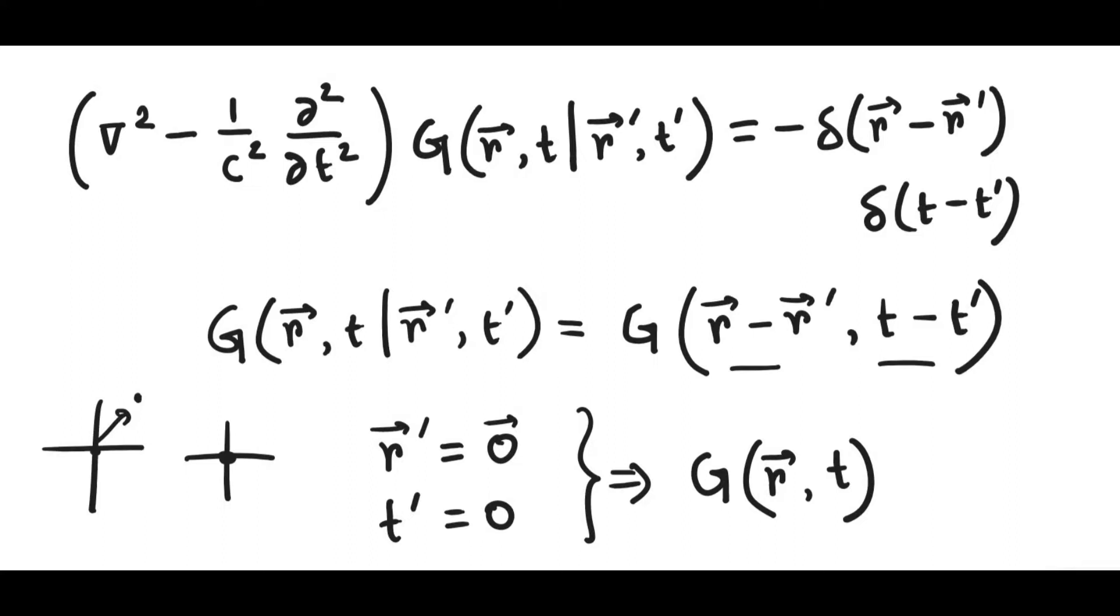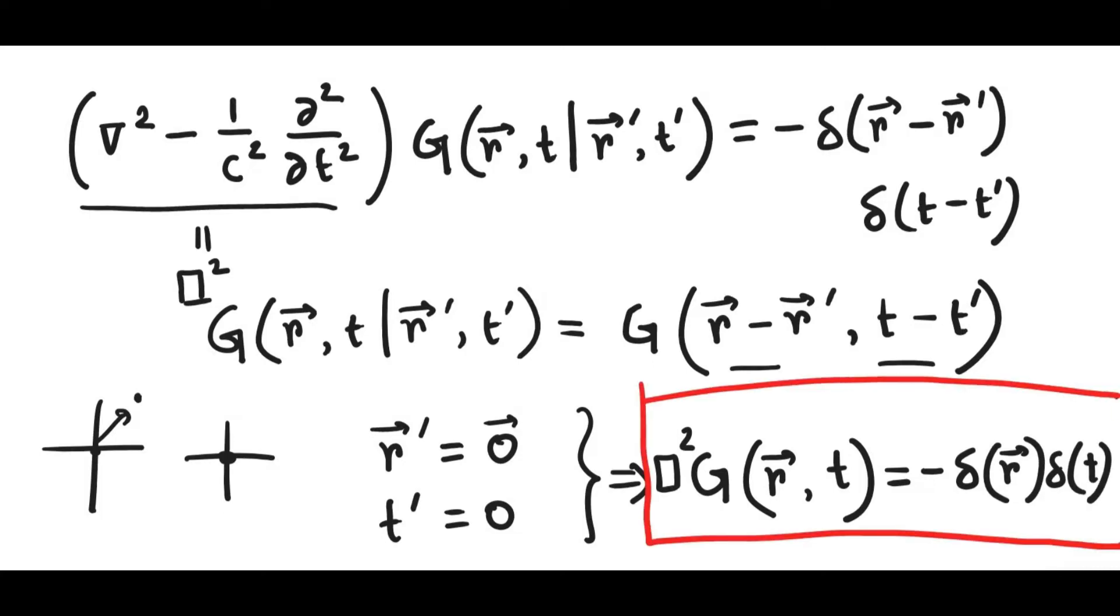And we have this operator, which is also sometimes written as the box square operator. So if the box square operator acts on it, on the right hand side, we get delta of R times delta of T. So now this is our Green's equation. So that doesn't seem like a major simplification, but we need to employ all the help we can get. So that's what we shall be working on.